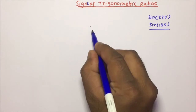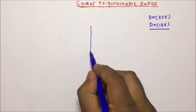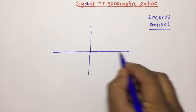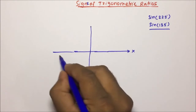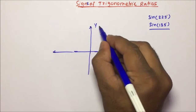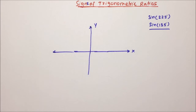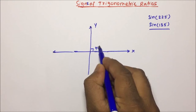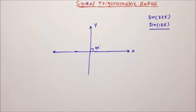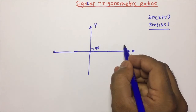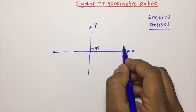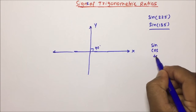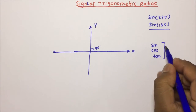This is our x and y axis. x and y will be perpendicular to each other, meaning the angle between x and y will be 90 degrees. The first thing we need to know is the signs of the Trigonometric ratios — that means sine, cos and tan — and what will be their sign in each quadrant.